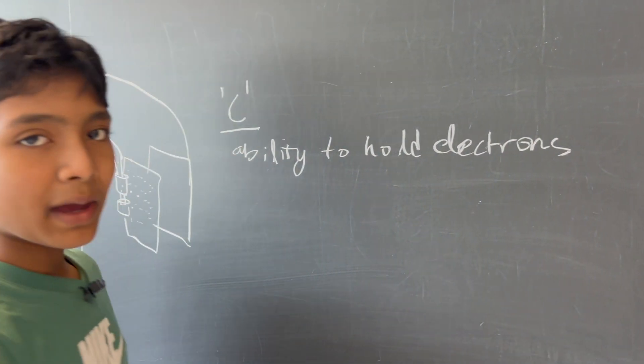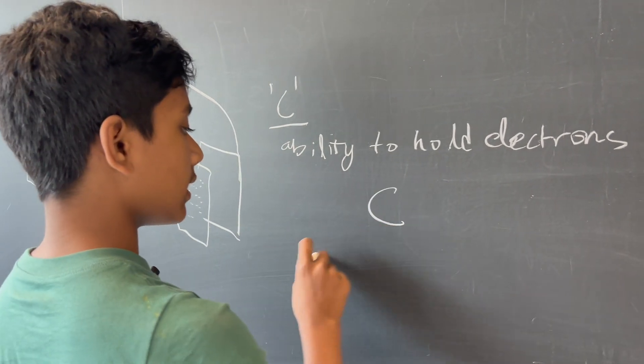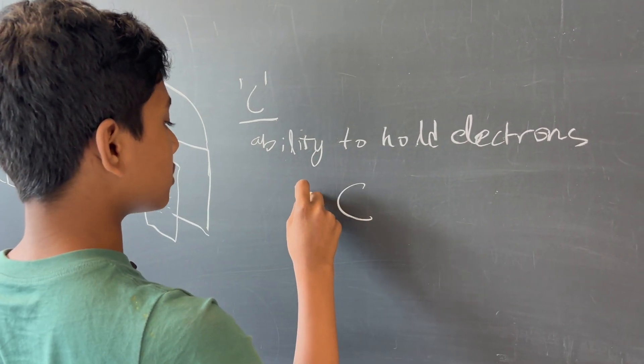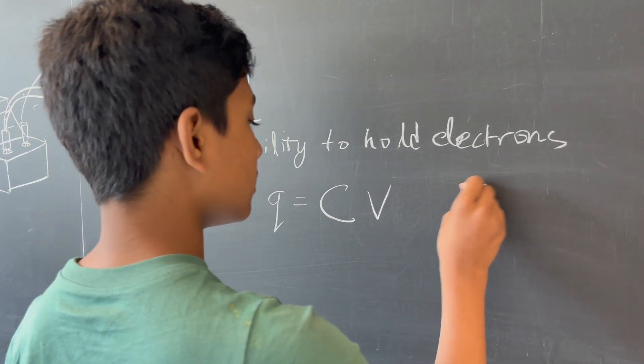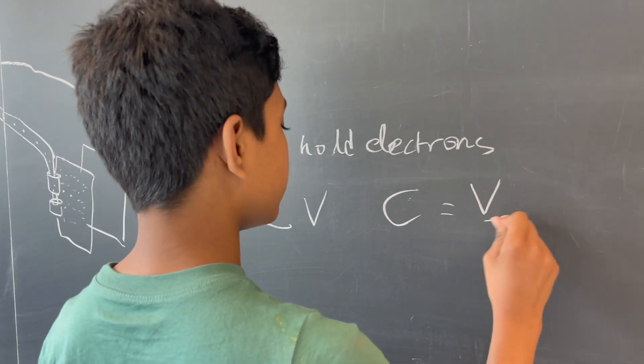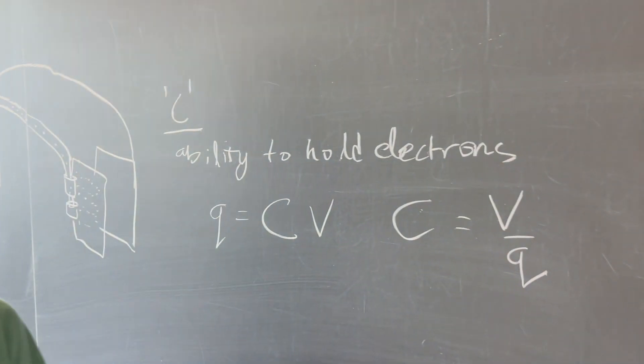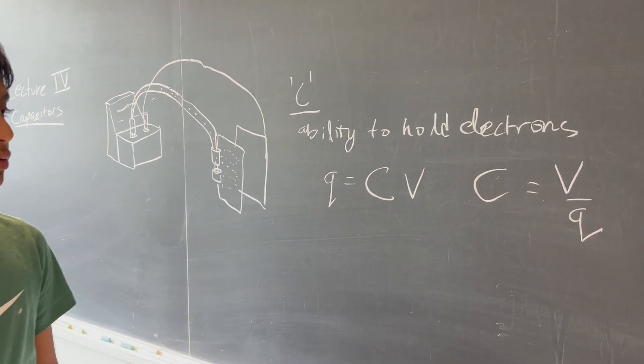Now this capacitance is represented by the formula Q equals C times V, or C is equal to voltage divided by charge. So pretty simple, right?